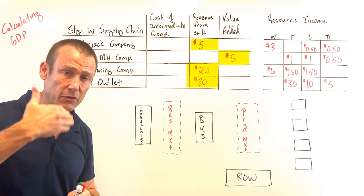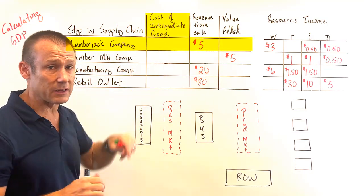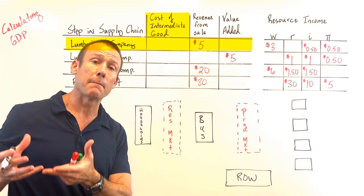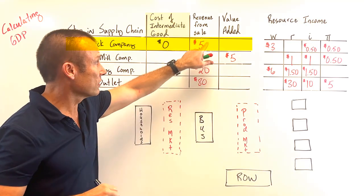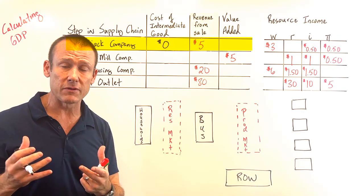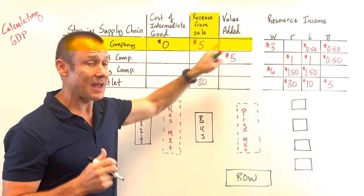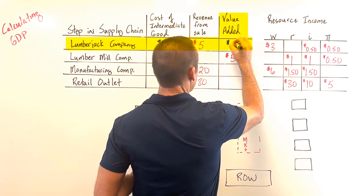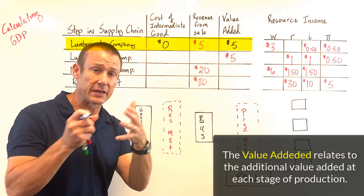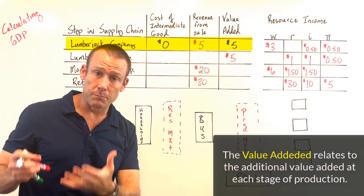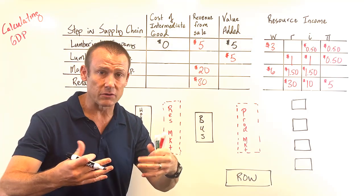We'll think through the table to fill it out. Starting with the lumberjack — they're at the beginning of the process, so the cost of the intermediate good is zero. They sell the log to the lumber mill for five dollars, which means they added five dollars of value. The value added is always what they sell their step at minus what they paid for the intermediate good.